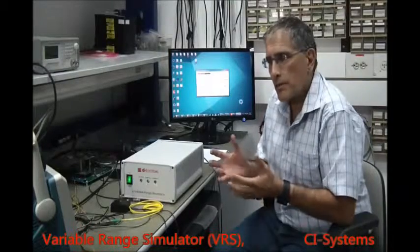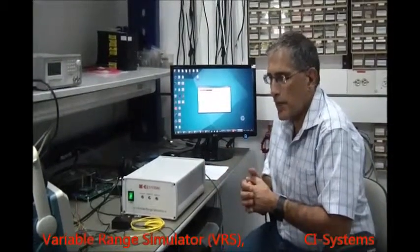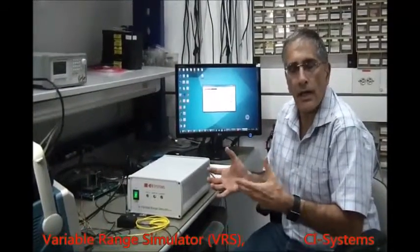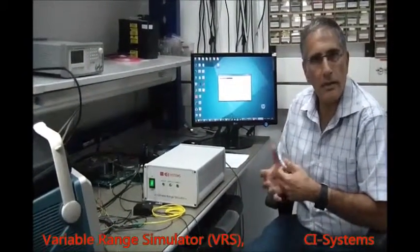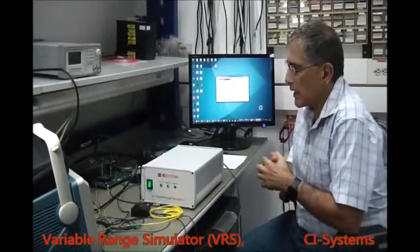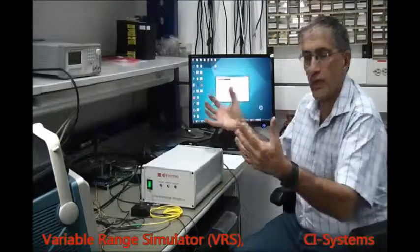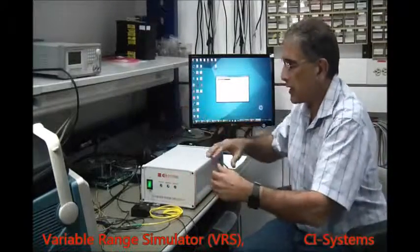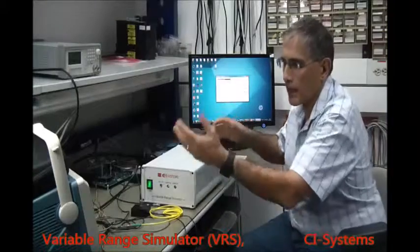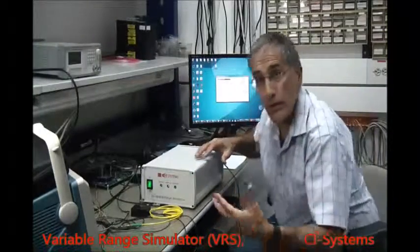The experiment setup here, since we don't have a range finder, we're going to use some sort of mechanism to generate some optical pulses. And what I'm going to show you is the different components that are going to be the input to the VRS and then the output. We're going to use the following pieces of equipment.